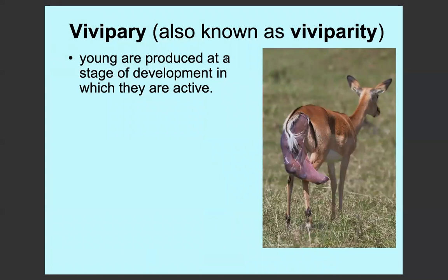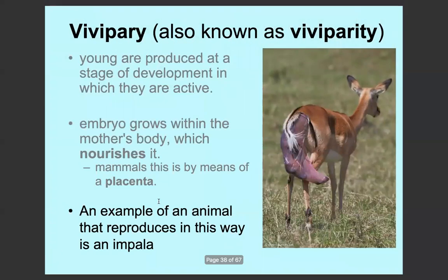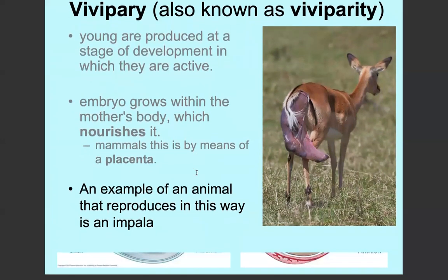The last type is viviparity, which is what mammals do, where the young are produced or released into the world at a stage of development in which they're already active. The embryo grows inside the mother's body and the mother nourishes it by means of a placenta. An impala reproduces in this way, as do humans and pretty much all mammals.